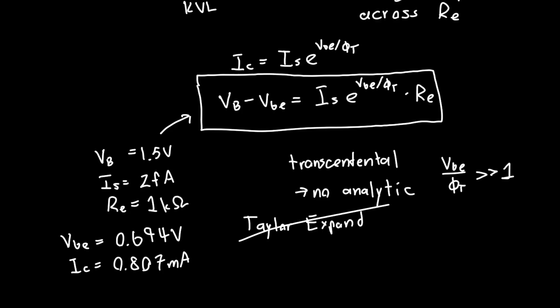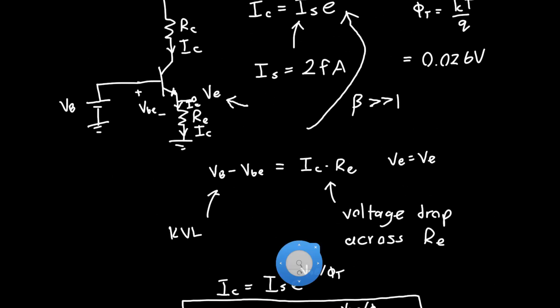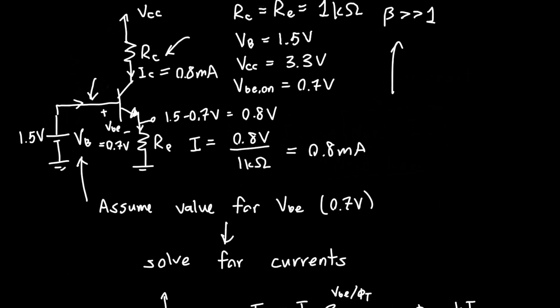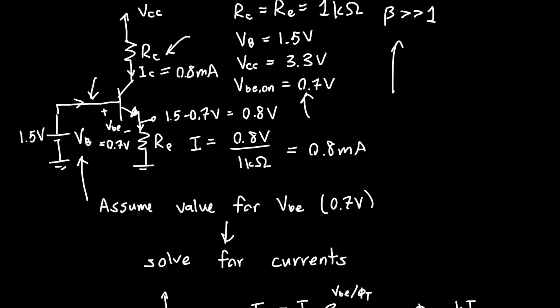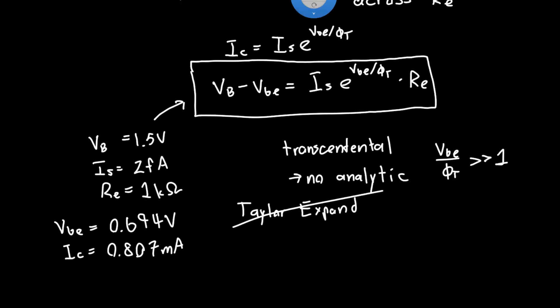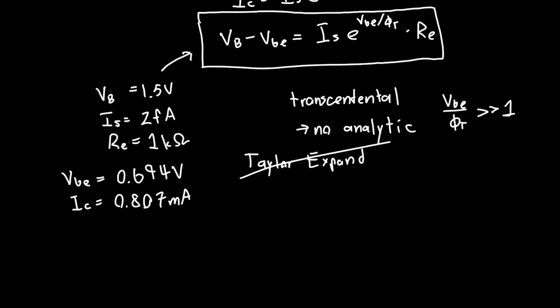Now compare this to the result that we got previously, from just approximating VBE, from just guessing VBE essentially. We got IC was equal to 0.8 milliamps and VBE was equal to 0.7 volts. Now this is really close. For a gross approximation, this is incredibly close to the correct answer.